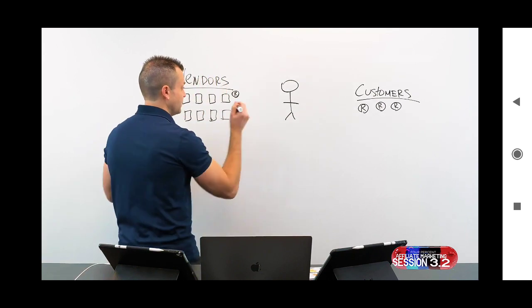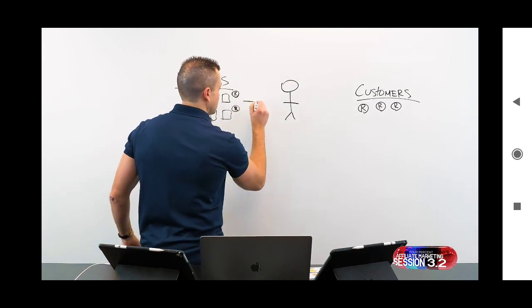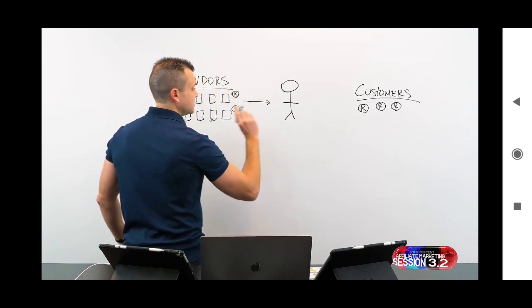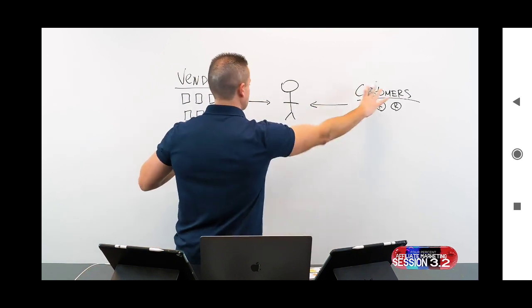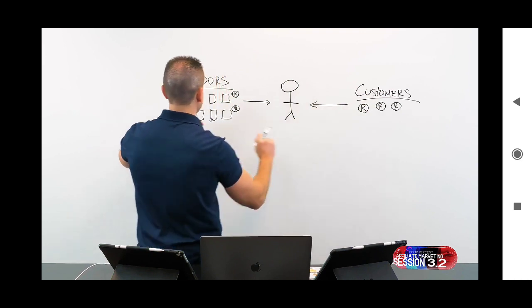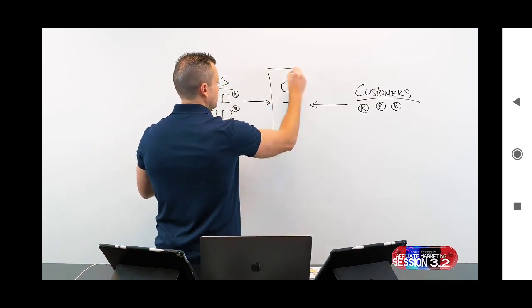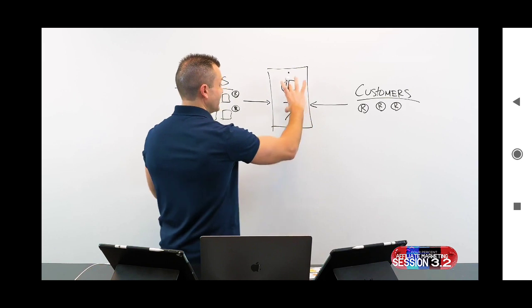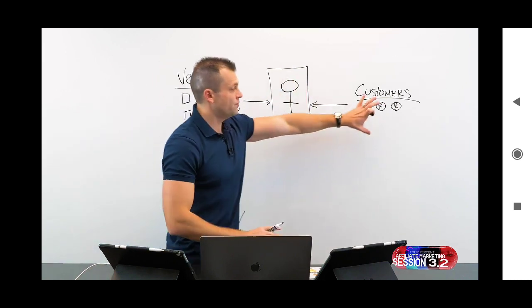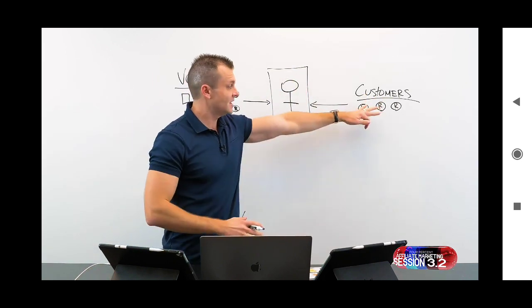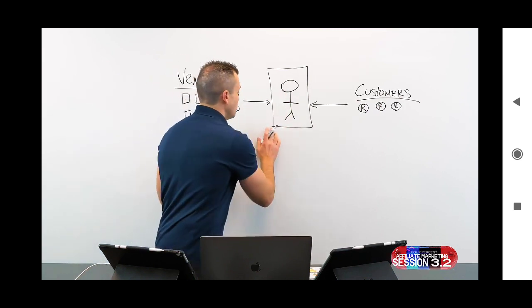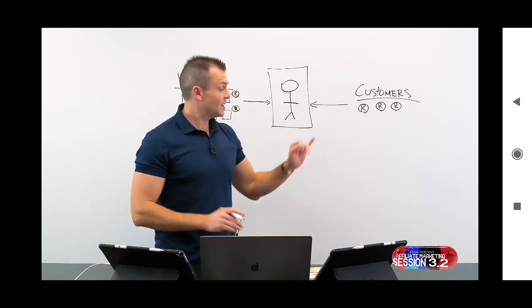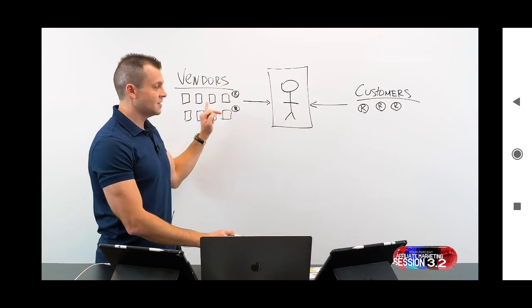So our job as affiliate marketers is we do this. We connect buyers with sellers, sellers with buyers. Customers, potential customers or prospects and vendors. So this is me right here and this will be you. And if I can connect these products with these customers in a way that makes these guys want to buy these products, what I do is I call, we call this affiliate marketing. I become an affiliate for these guys to sell these products.